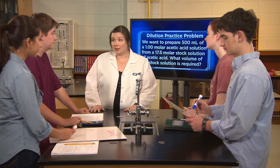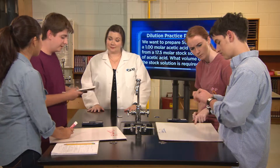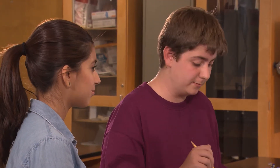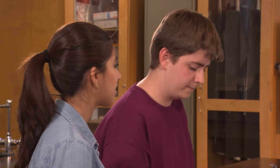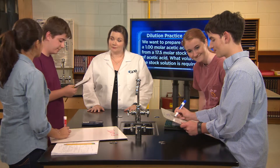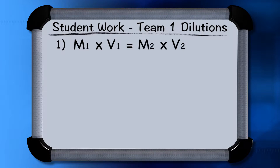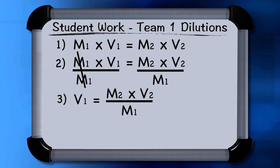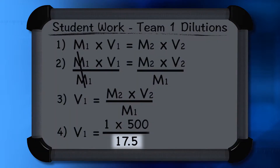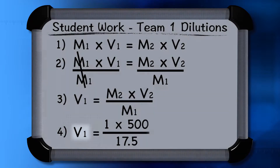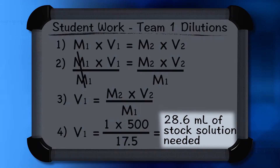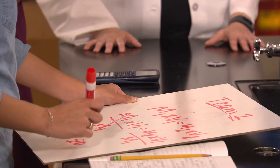Now see if you can all figure out how we should proceed. V1 is usually what we're solving for in dilution problems, right? Right. V1 is the volume of the concentrated solution that we'll need to measure out. Then we can add the volume of water necessary to finish the problem. So if we use M1 times V1 equals M2 times V2 and rearrange for V1, we know that M1 represents the molarity of the stock solution, which is 17.5 molar. Solving for V1, we get 28.6 milliliters — that means we would need 28.6 milliliters of the stock solution.